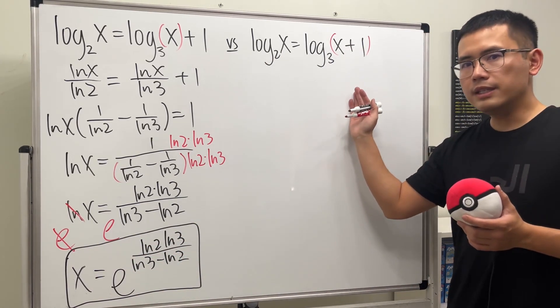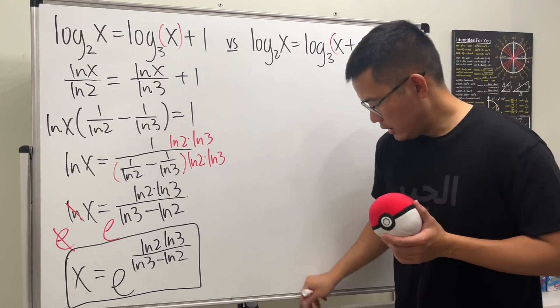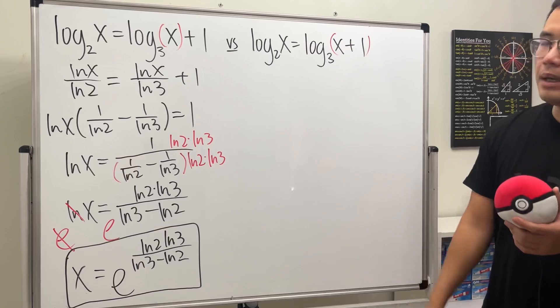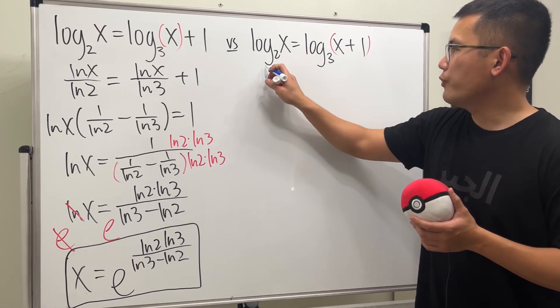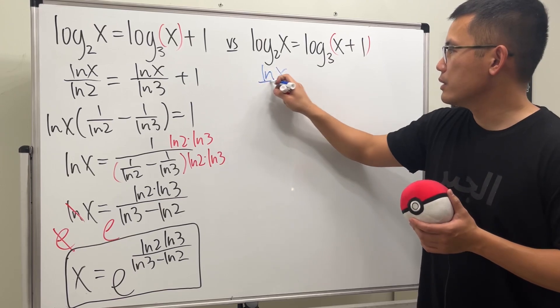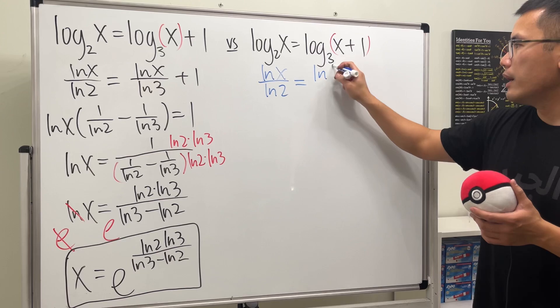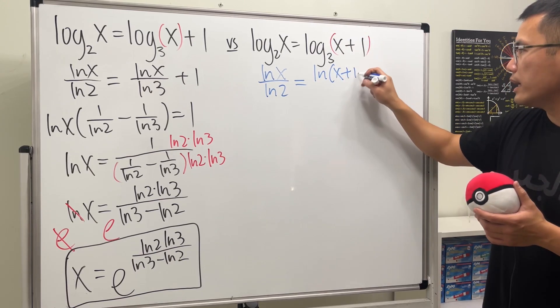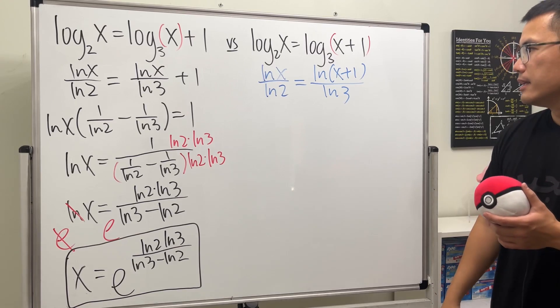Now, for this one, it's a little bit trickier, because if we use the same approach, meaning that if we write this as ln x over ln 2, thanks to the change of base formula, and this right here is ln of both x plus 1 over ln 3. Can we proceed?